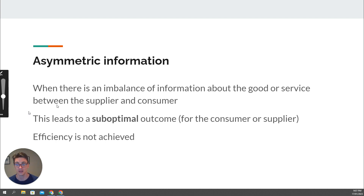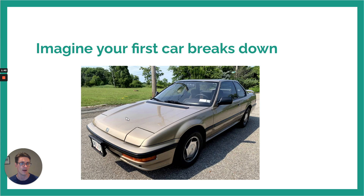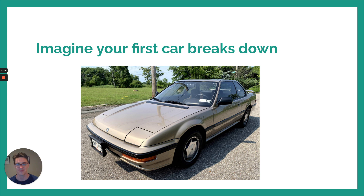Let me show you what this looks like with a little example. This is my first car — nothing like my actual first Honda, but this is the model. I want you to imagine you've bought your first car. As it happened to me, you drive it out and you're feeling amazing, and then it breaks down on you — smoke starts rising out of the bonnet. So you take it to the mechanic, and the mechanic says the needle bearings in your alternator have rusted out and you need a new alternator — it's going to cost $800. So we have an asymmetric information problem here. There's an imbalance between you and the mechanic, the supplier.